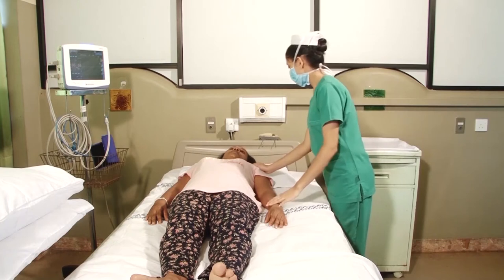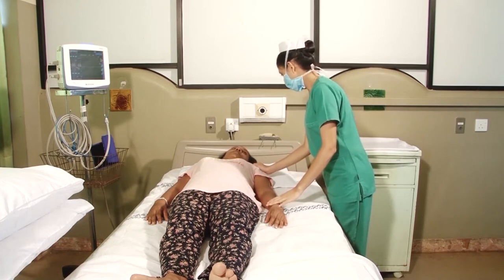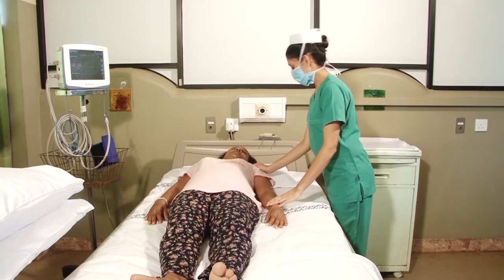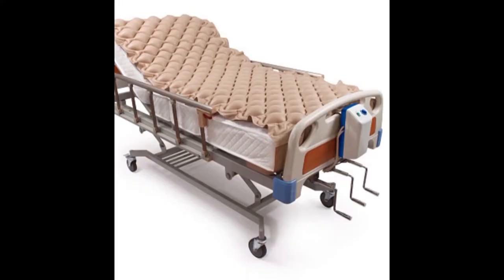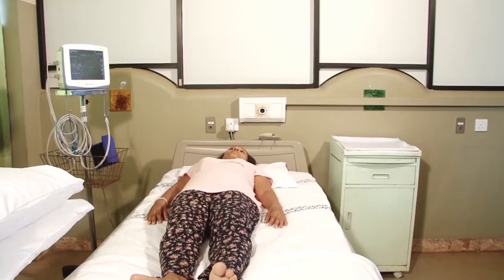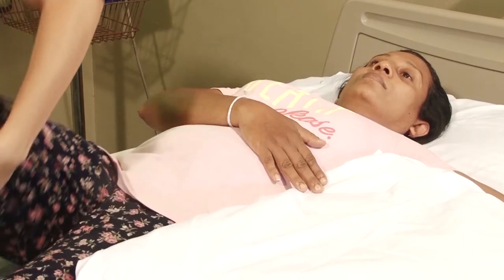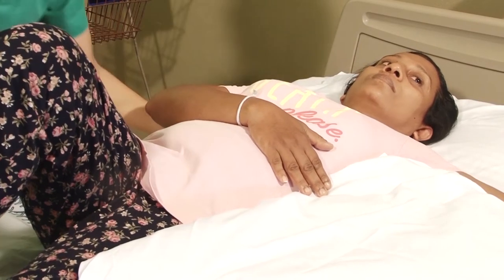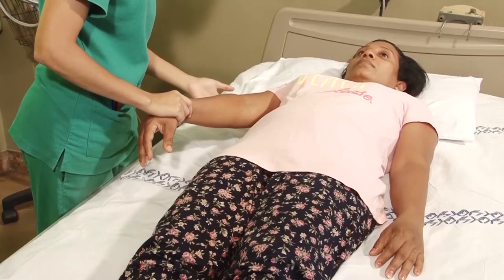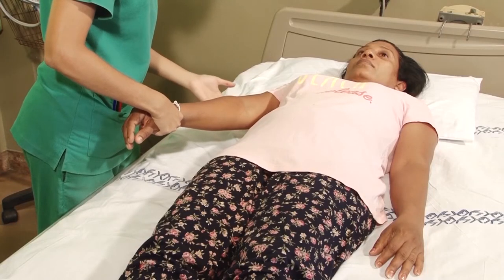Pressure sores occur due to skin breakdown in patients with poor mobility and should always be prevented. We can do it by providing an air mattress, keeping the skin clean and dry, especially in the presence of urinary and fecal incontinence, properly positioning the patient, changing the position every two hours, and checking daily for red areas, especially in pressure points like elbows,